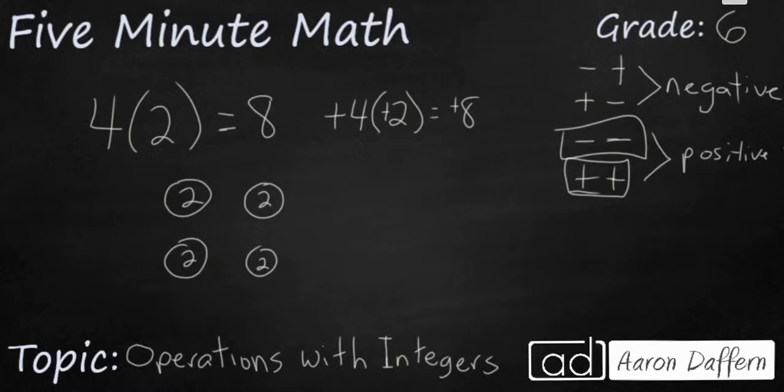But what happens if I change this to where it is four groups of negative two? Four groups of negative two, or four times negative two is going to be a negative two, a negative two, a negative two, and a negative two. Four groups of negative two, that's going to make negative eight. Because when you have a positive and a negative, that always makes a negative.